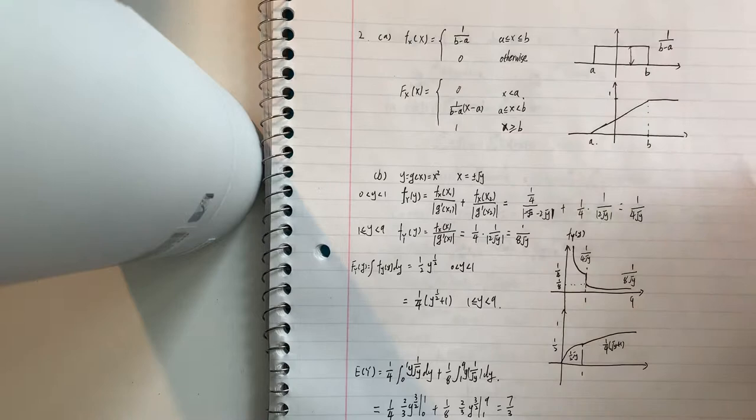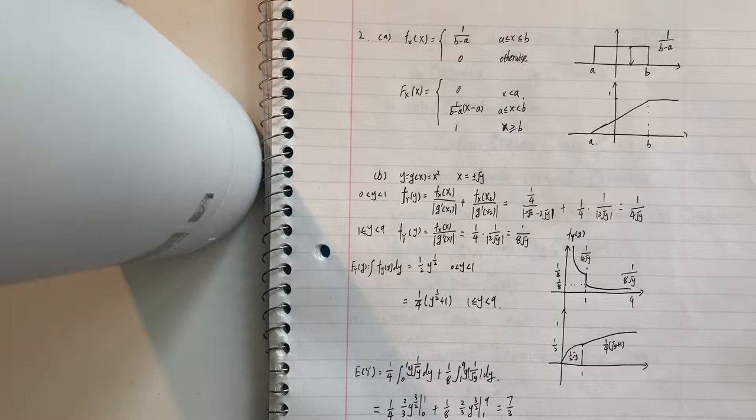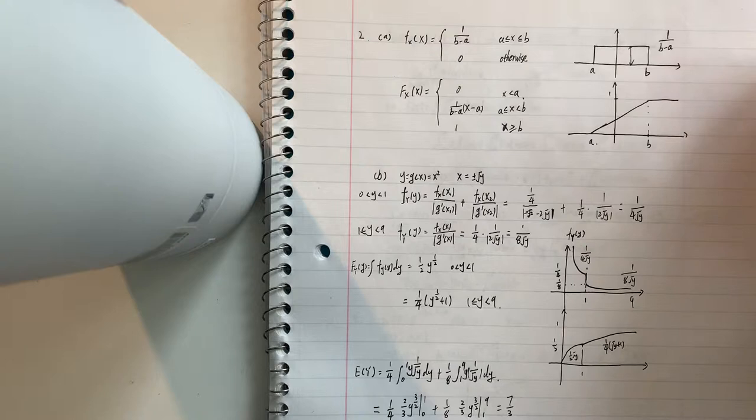And for the second one, now given a equal to minus 1 and b equal to 3, we need to find and draw f of y and big F of y, and also find the expectation of y.